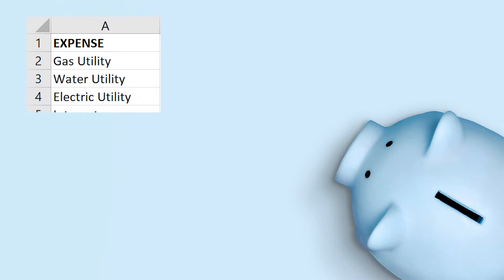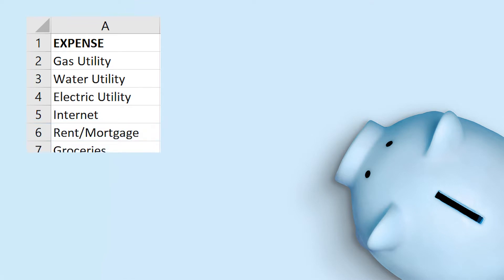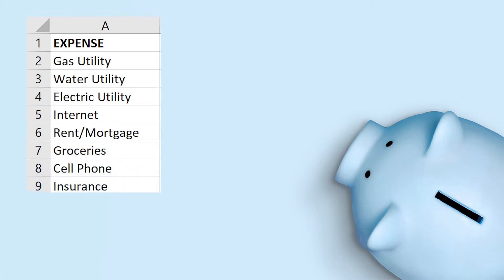In that Excel spreadsheet, list those expenses — whether it's DTE or consumers energy for your heating or electric, your internet bill, your grocery bill, all those household expenses, your insurance for your vehicle, gas.